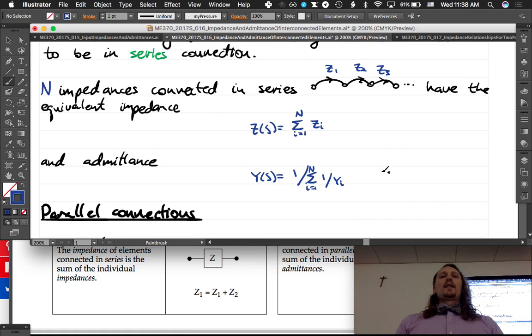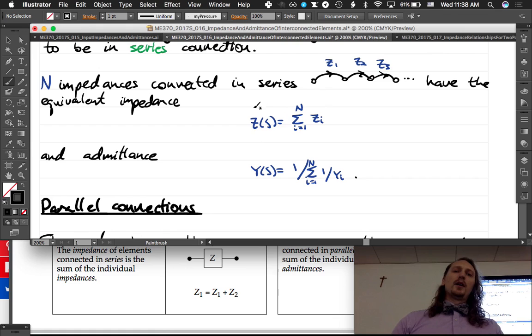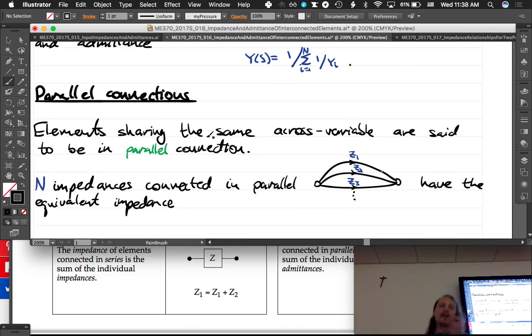So which one is easier to compute? This one, right? Better. Parallel connections.